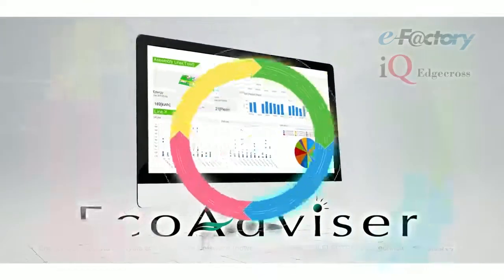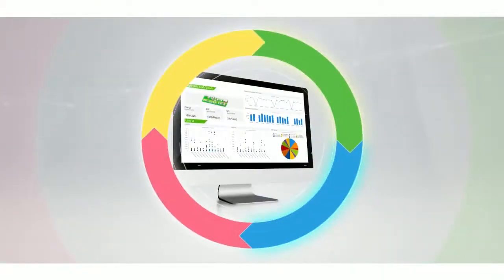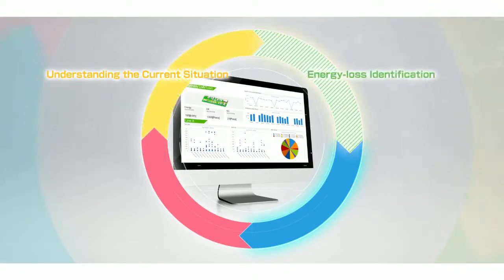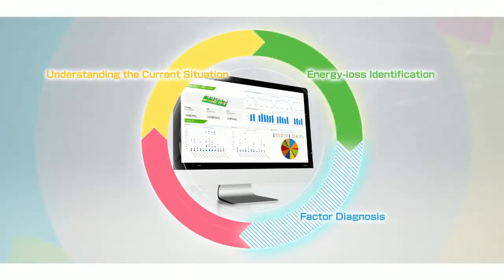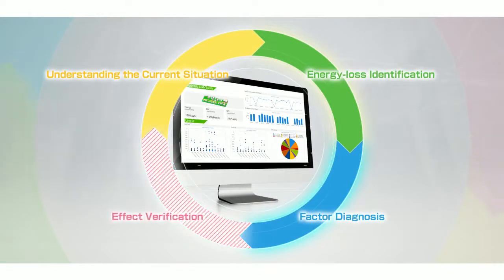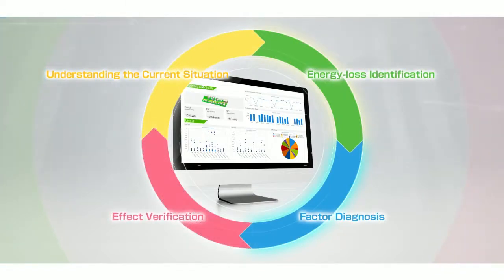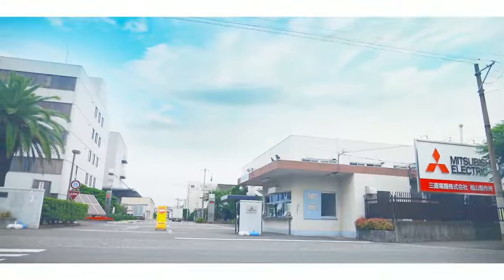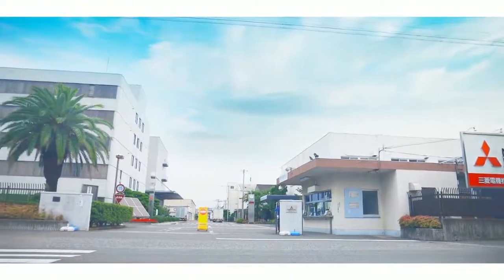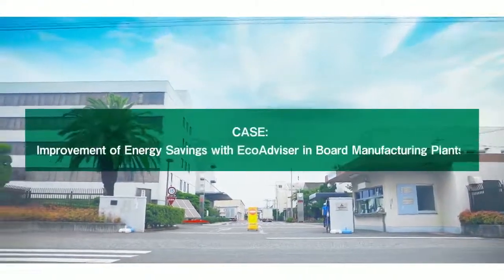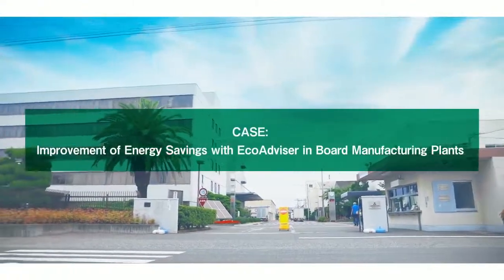Four processes — understanding the current situation, energy loss identification, factor diagnosis, and effect verification — are strongly supported by the EcoAdvisor for energy-saving activities. Here is a case where energy-saving has been realized by the EcoAdvisor in board manufacturing plants.